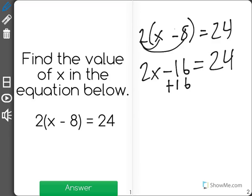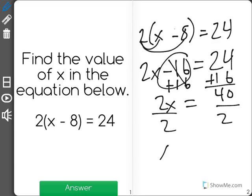Then I'll add 16 to both sides, again always trying to isolate x. This cancels out to 0. Now I have 2x equals 40. Divide both sides by 2 to find out again that x equals 20.